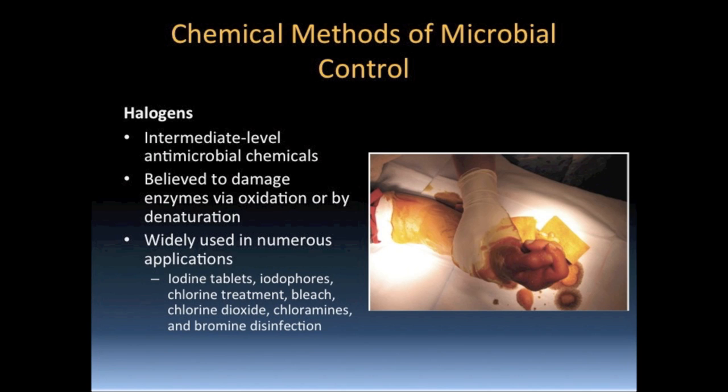Chlorine and bromine are more dangerous and difficult to handle, and therefore are not used as often as iodine and chlorine. Bromine can be used as an alternative to chlorine for the disinfection of hot tubs, swimming pools, and cooling towers. It has the advantage of evaporating more slowly than chlorine at high temperatures. Fluorine is commonly used in drinking water and toothpaste. Halogens are effective against vegetative bacterial and fungal cells, fungal spores, but only some endospores, protozoan cysts, and many viruses.